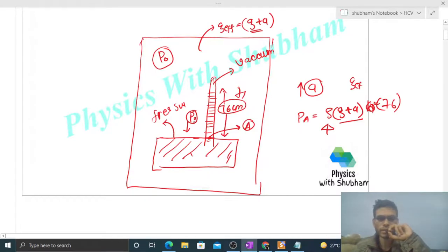At the same level in the same liquid, the pressure should be the same. So the pressure at A should equal p naught. Therefore, p naught equals rho(g plus a) into 76.